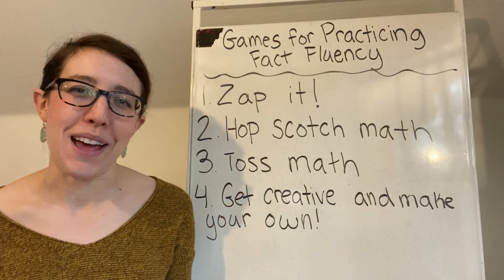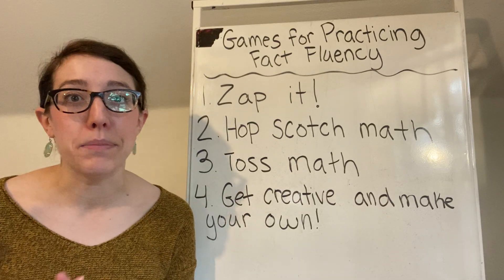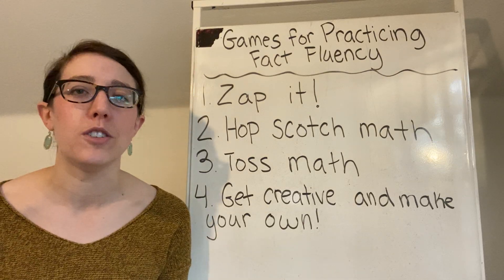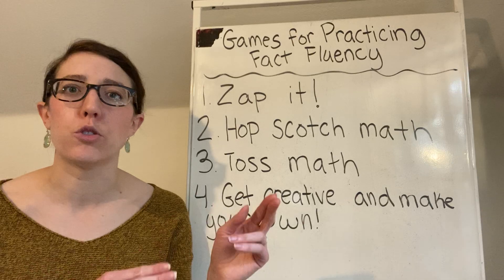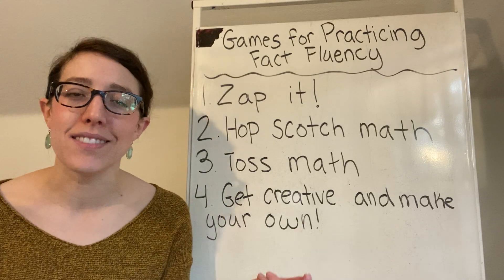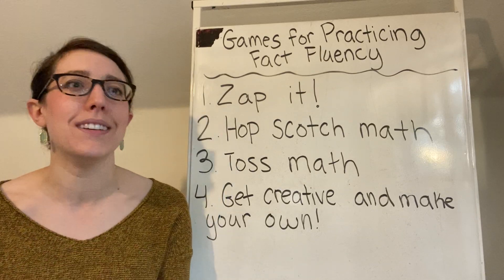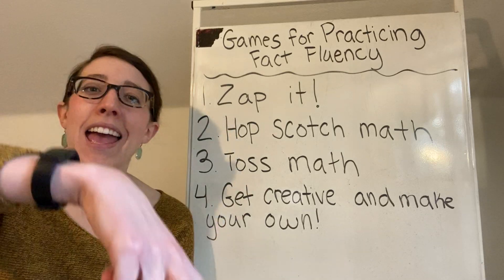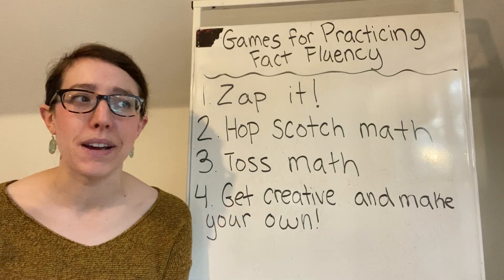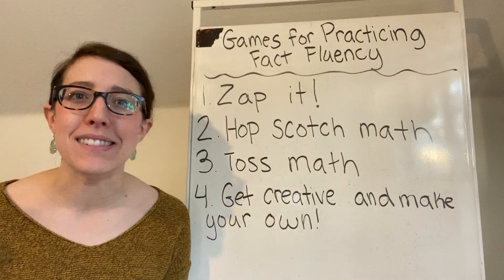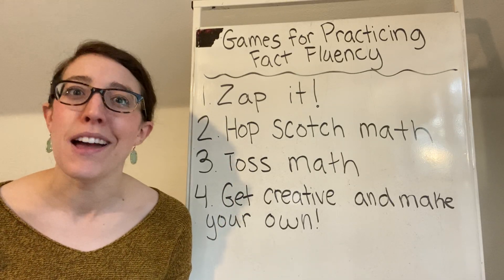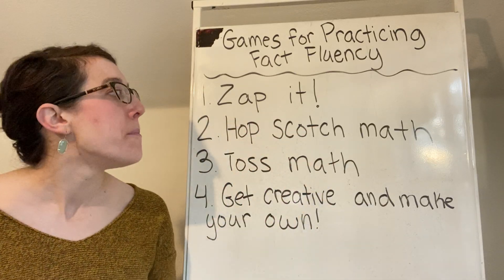You probably don't have popsicle sticks at home, so you're welcome to buy them at a local store, but you can also play the exact same game with cut-up sheets of paper. Get a bowl, cut up strips of paper, and on each strip write either an addition or subtraction fact. Some of those would say Zap It! Fold those pieces and put them in a big bowl so you can't see what they say. It's a really simple game, but I've been playing it literally every year of my seven years of teaching, and it might be the most entertaining game I've ever played with kids.